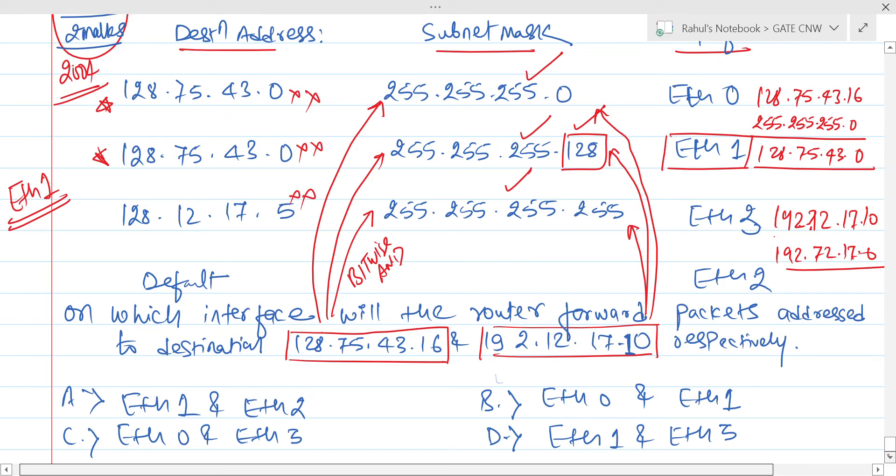And if you are going to perform bitwise AND operation between this and this, you are going to get 192.72.17.10, which is again not here, not here, not here. So in that case, it will choose default, the default ethernet two.